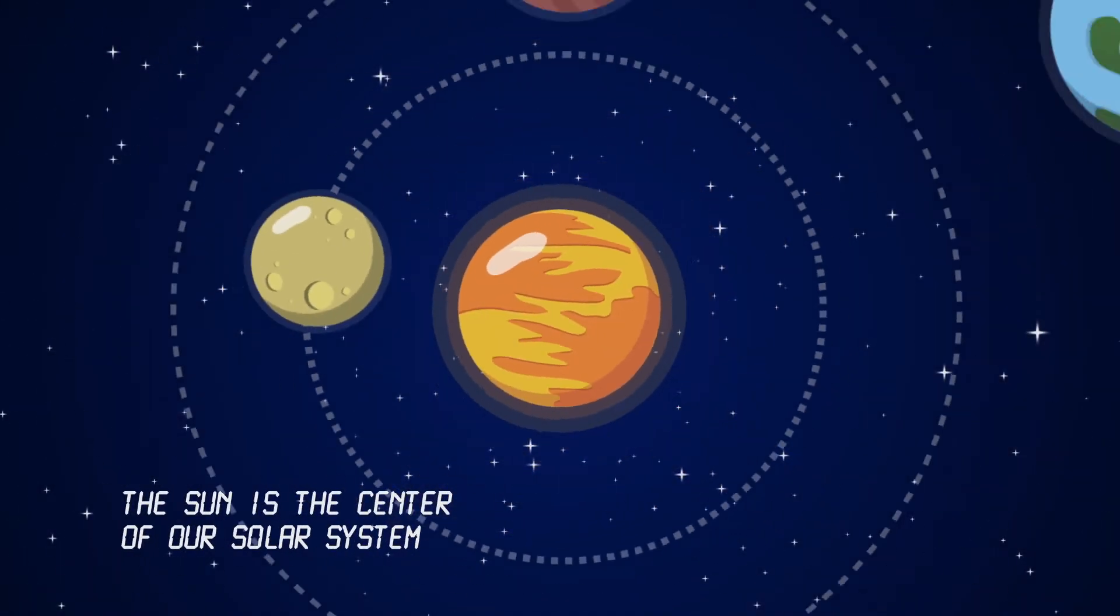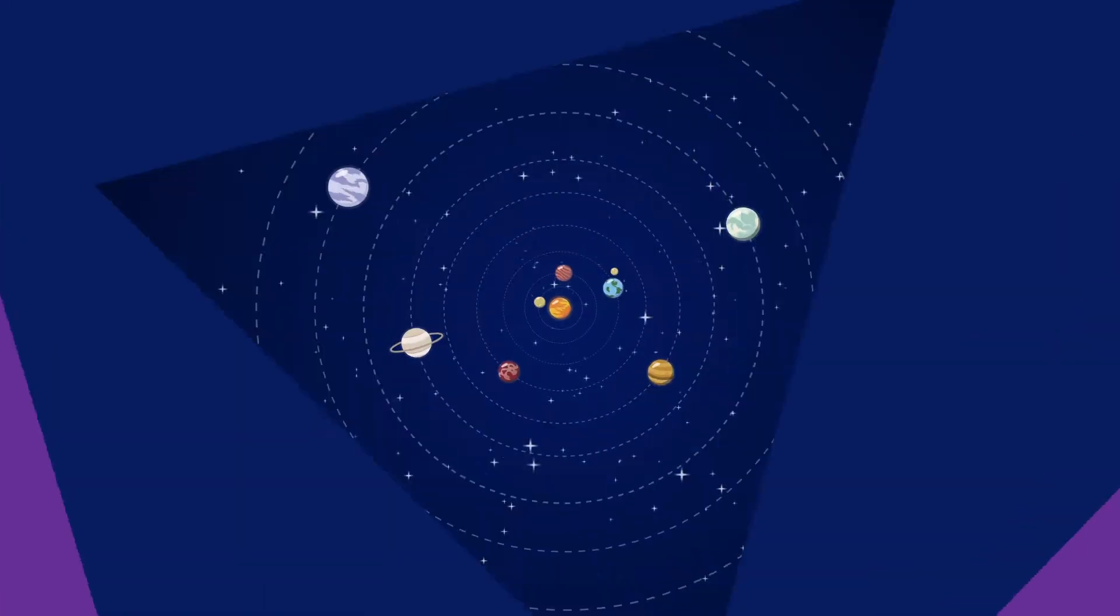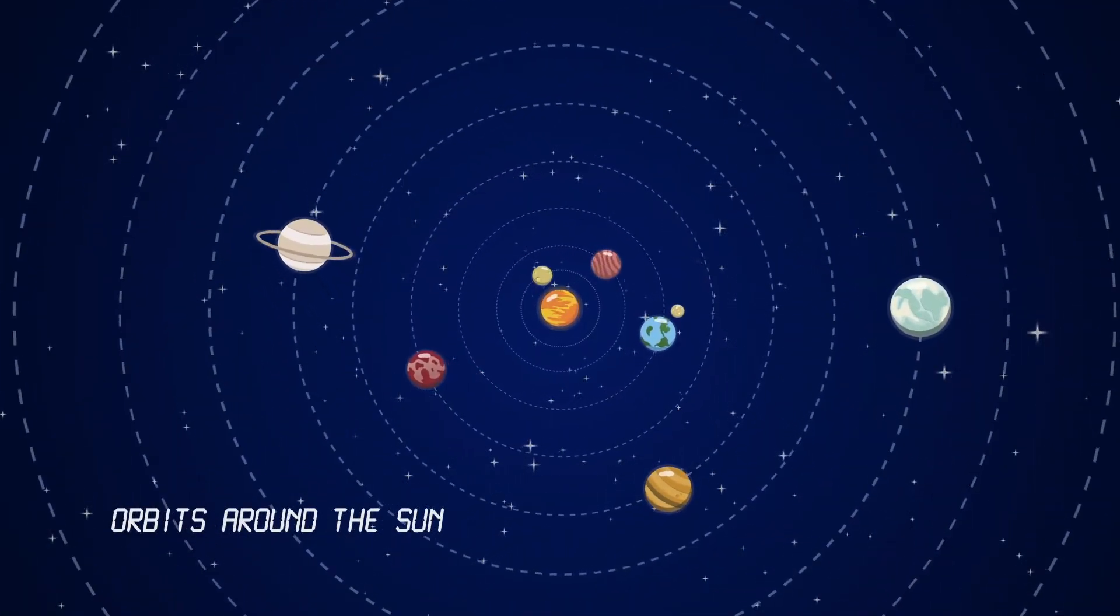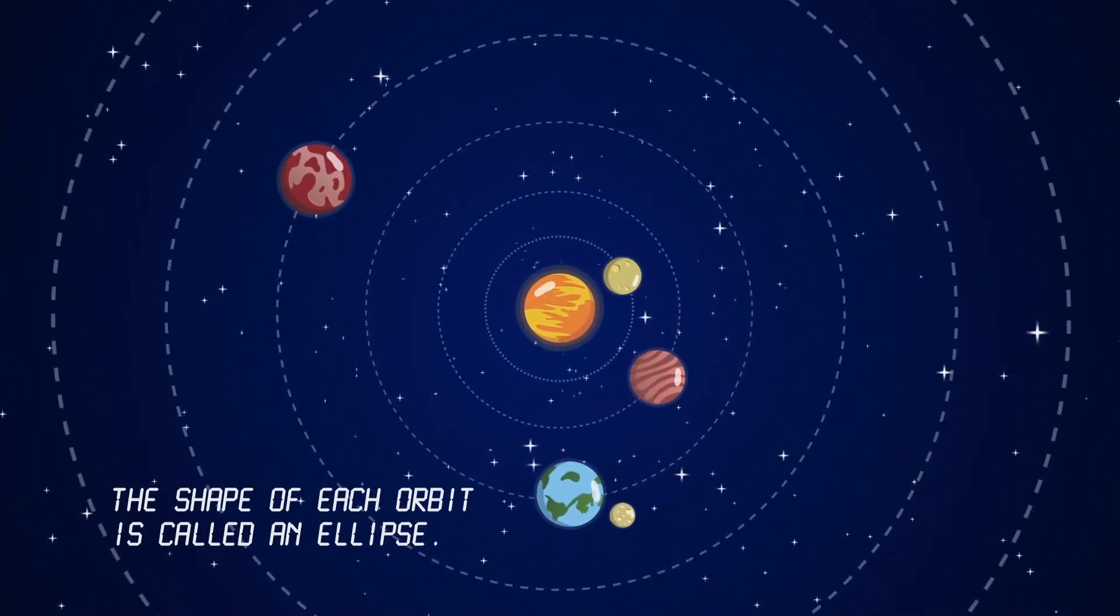The Sun is the center of our solar system. It is the largest body in our solar system. Nine planets follow paths called orbits around the Sun. The shape of each orbit is called an ellipse.